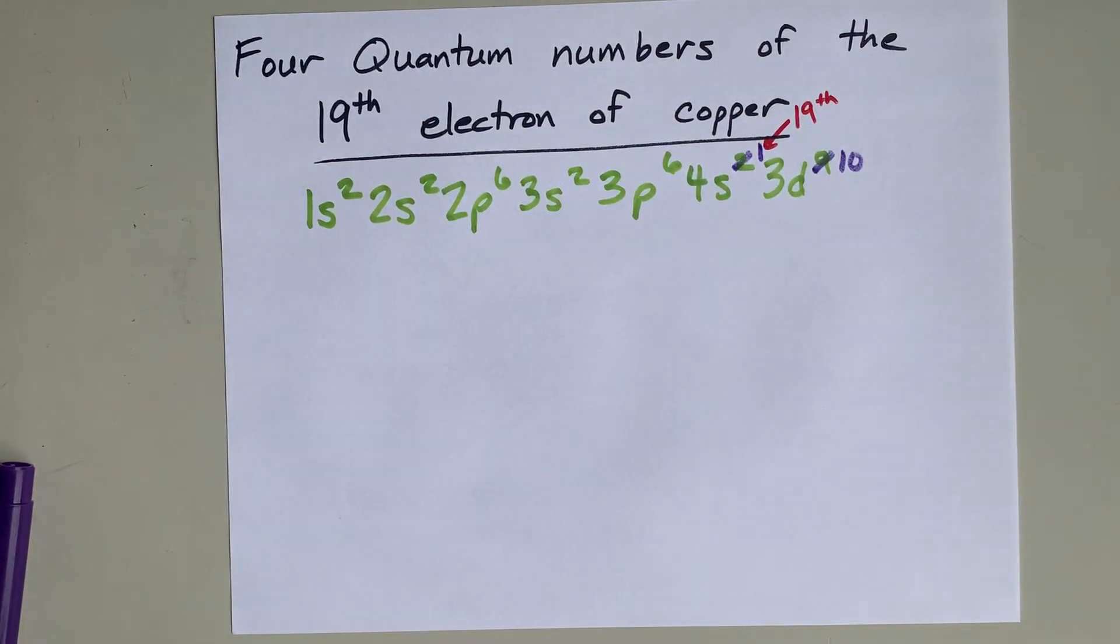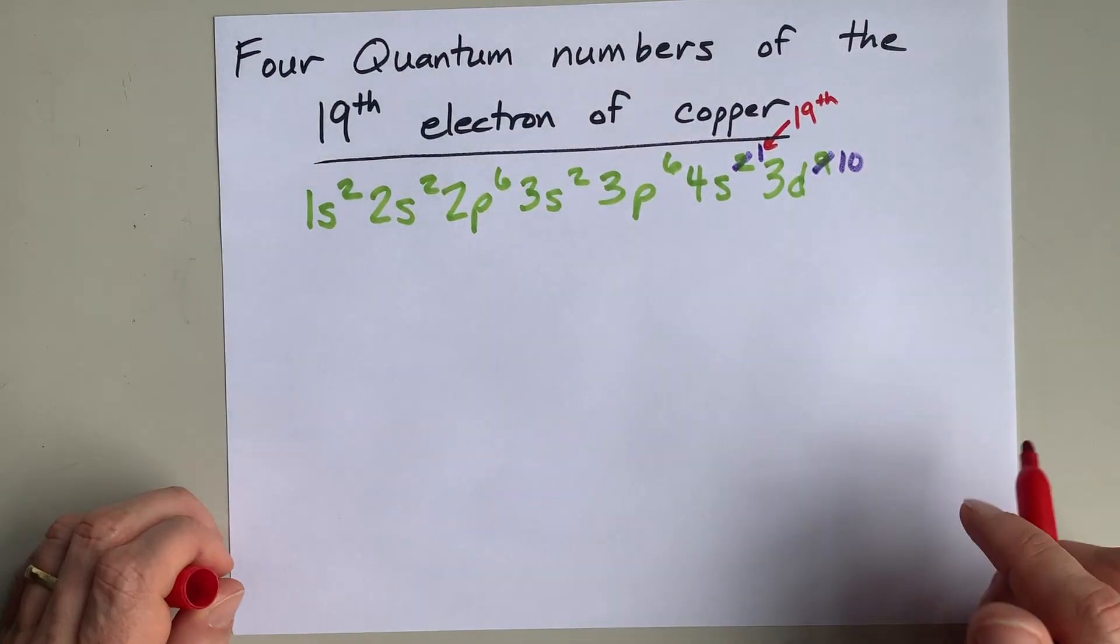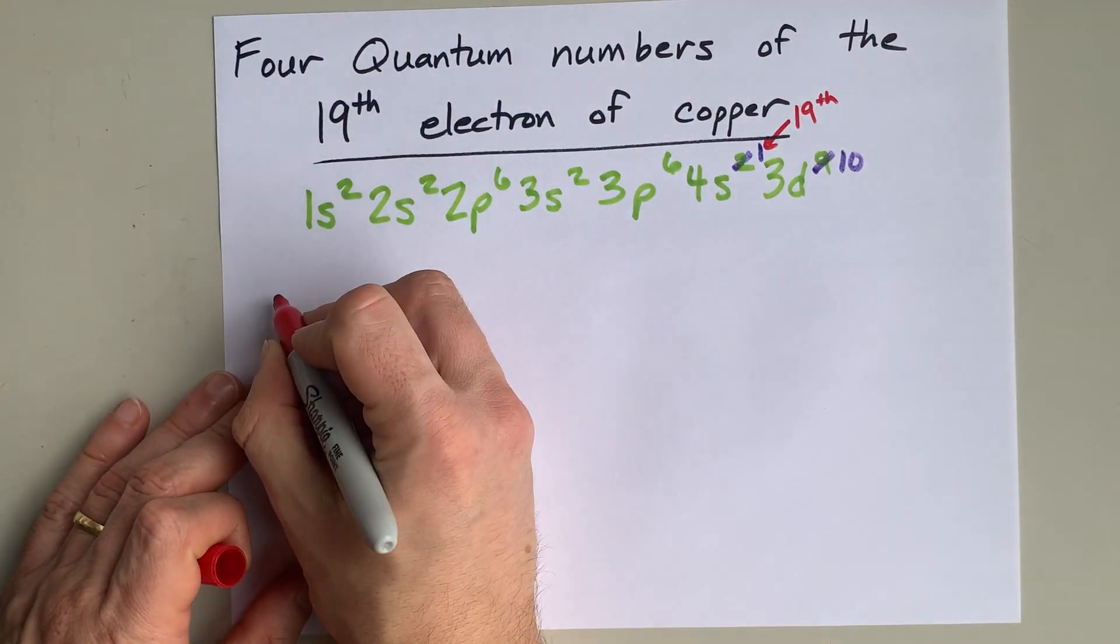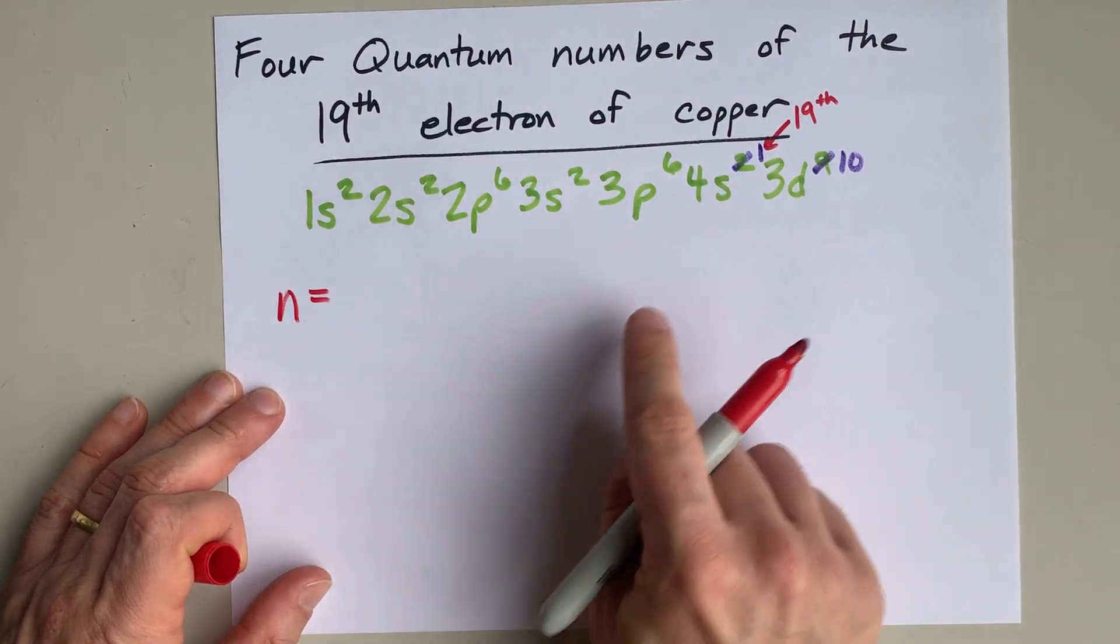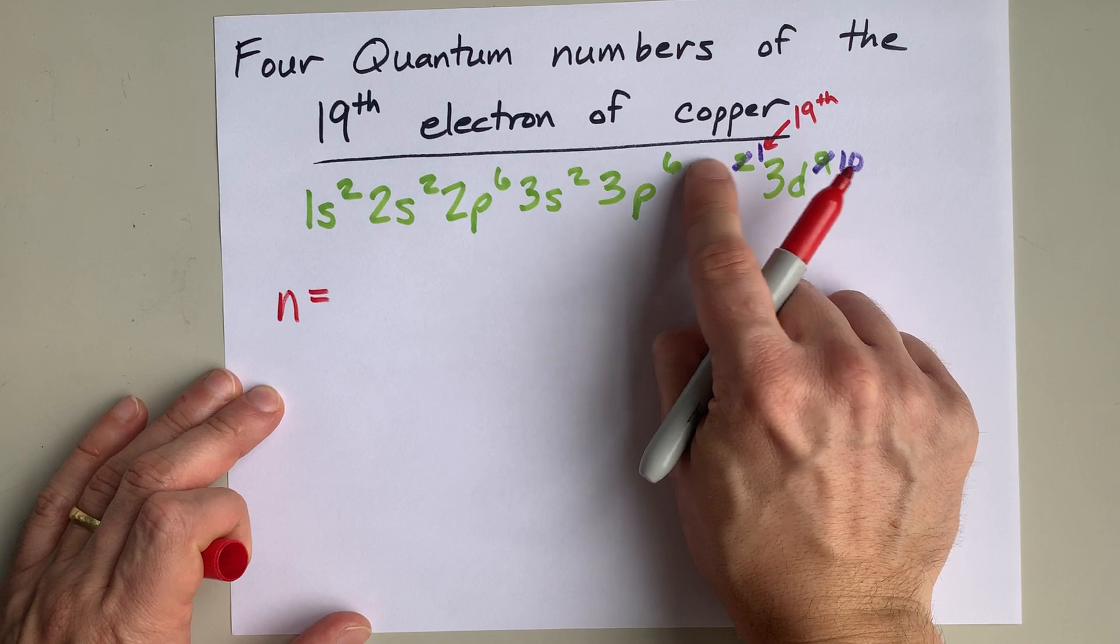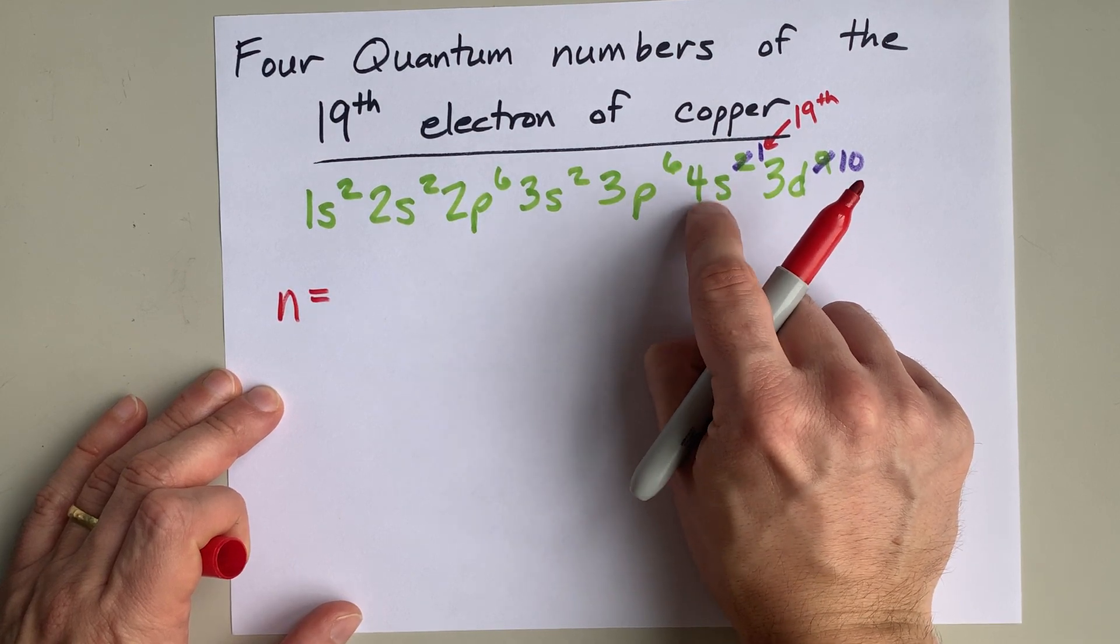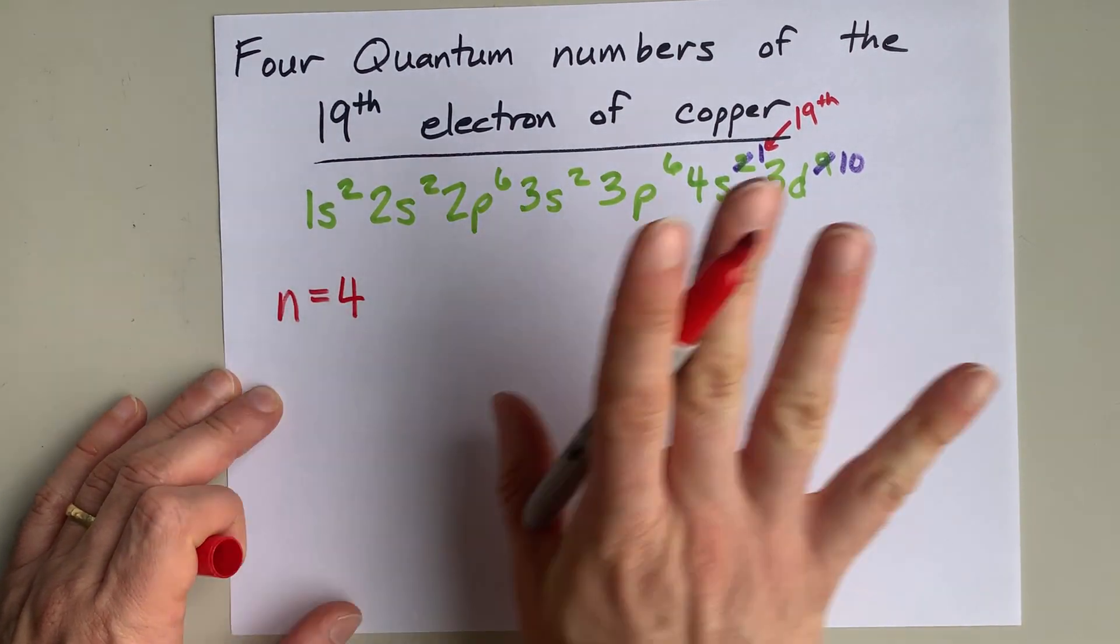Now, to figure out its quantum numbers, we're going to do a little more work. Step one: N, the principal quantum number, is this number on the orbital label. N equals 4. Done.